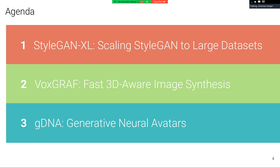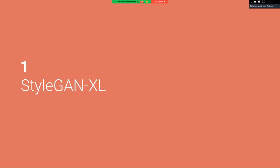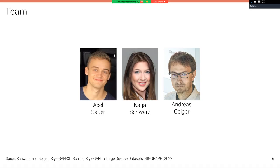In this talk, I want to show three recent works from my group. The first one is on generating images, StyleGAN-XL. And then we move to 3D, VoxGRAF for fast 3D-aware image synthesis. And finally, towards generating not only static shapes and appearances, but also humans in motion, generative neural avatars. But I will start in the 2D domain with StyleGAN-XL. And this is joint work with my PhD students Axel Sauer and Katja Schwarz.